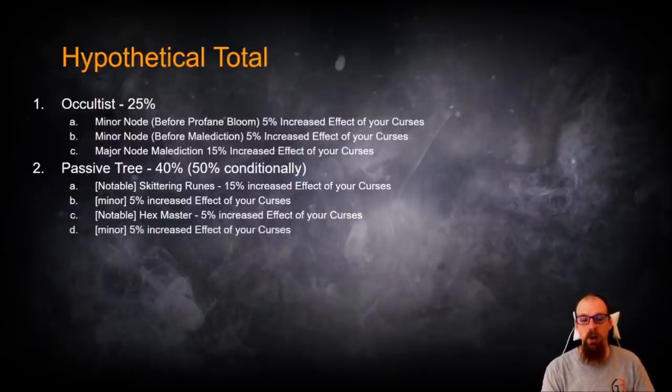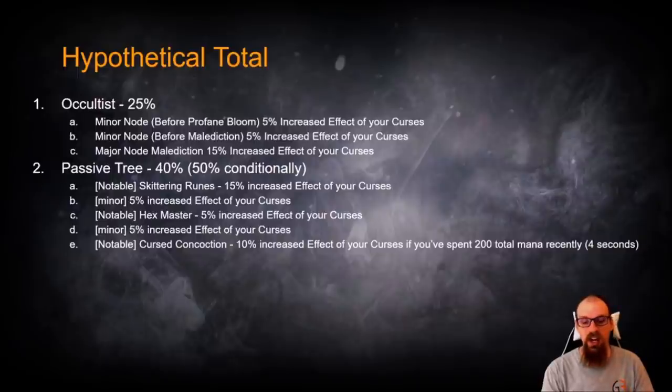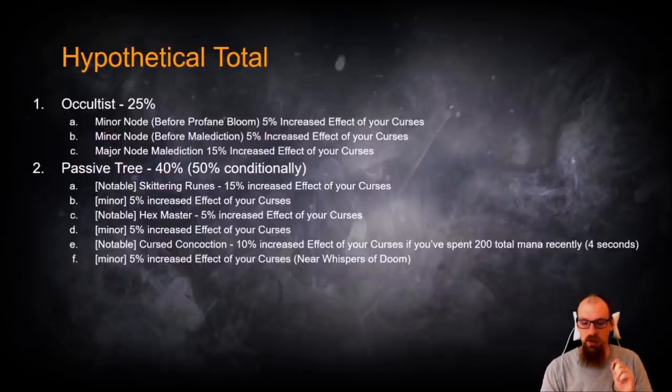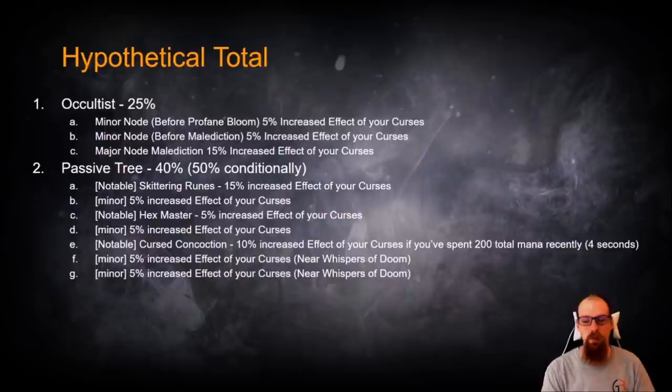the notable Hexmaster, which gives us 5% increased effect of curses, along with a minor node, 5% increased, and then the notable Cursed Concoction, if we want that conditional 10%, and then the minor node before that on Whispers of Doom, 5% increased effect of your curses, and the second one that's right before Whispers of Doom, 5% increased effect of your curses.